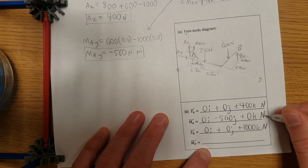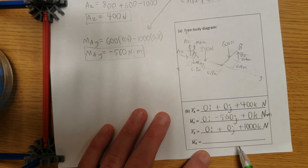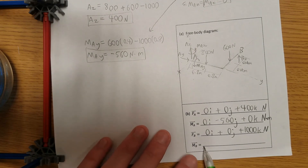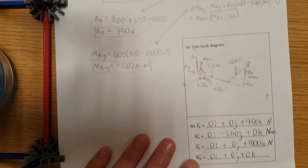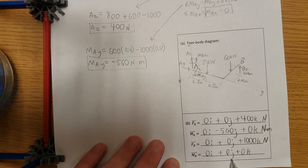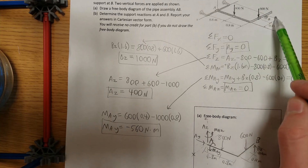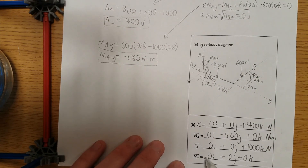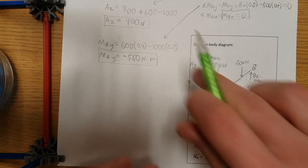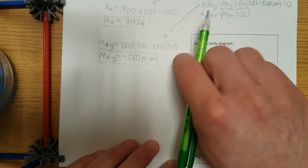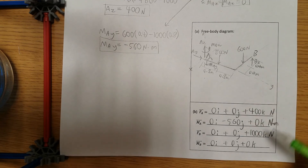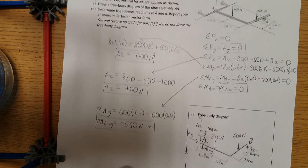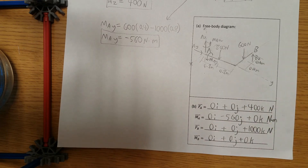The moment at B is simply zero — there was no moment reaction at B. Because it's just resting on a smooth surface support, it can move around freely with moments, and all it does is push up. Looking through all these values, they all seem to make sense with everything occurring in our free body diagram.